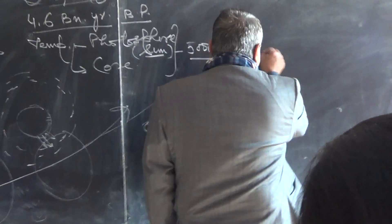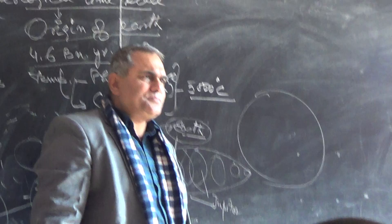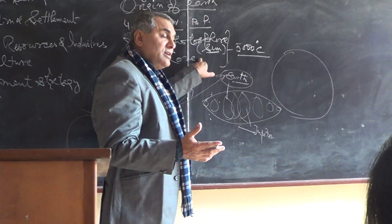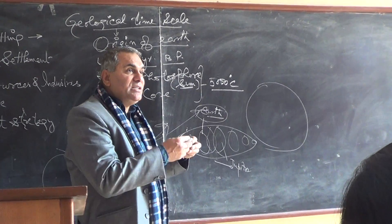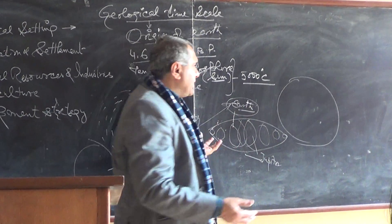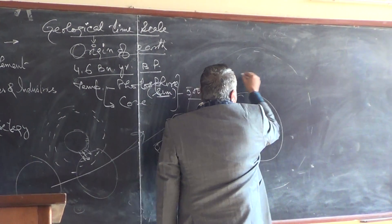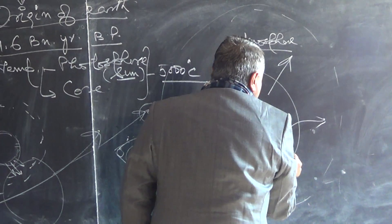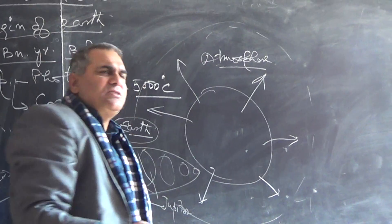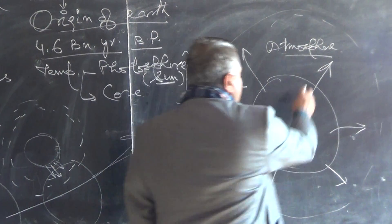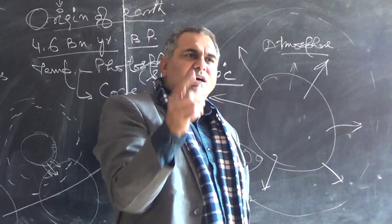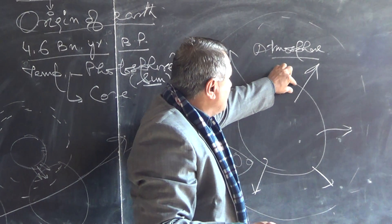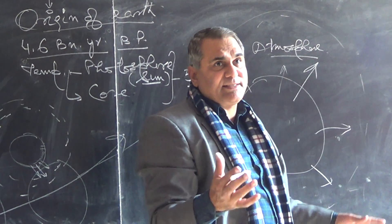Once the Earth formed, it was a burning mass in liquid state and was very hot. The temperature of the crust and core were the same earlier. Gradually it started losing temperature, which means it developed an atmosphere. Heat was released from the crust to the atmosphere, so the formation of the atmosphere took place. Many gases were released, and the outer crust became hard.